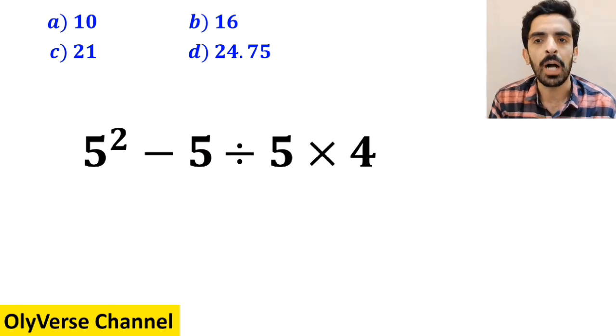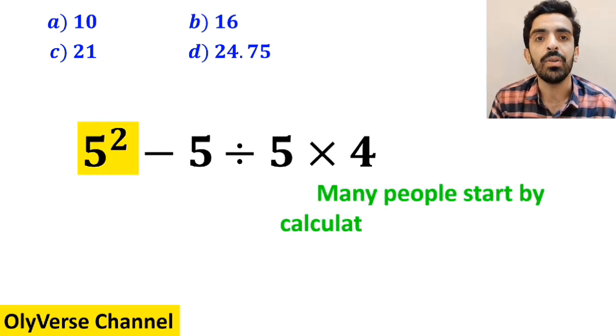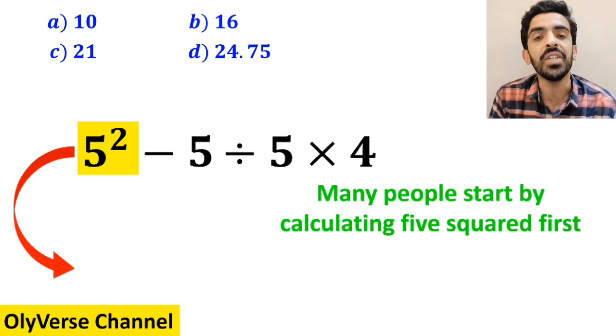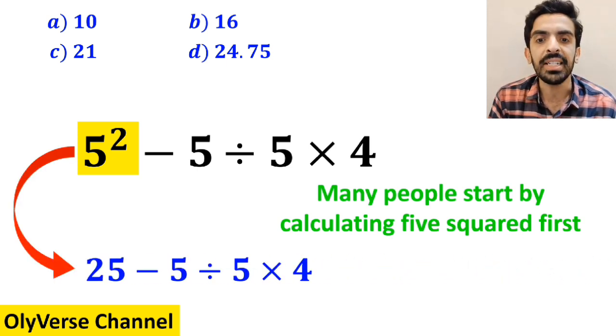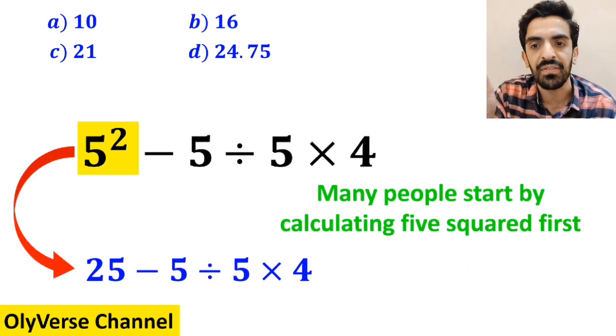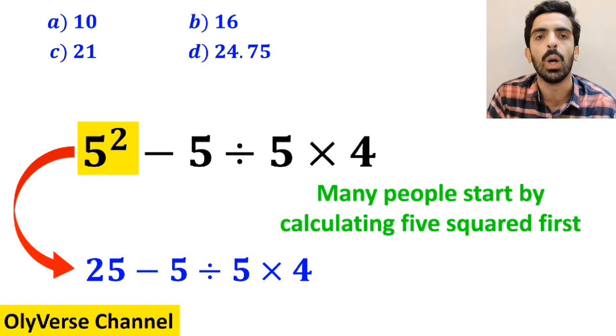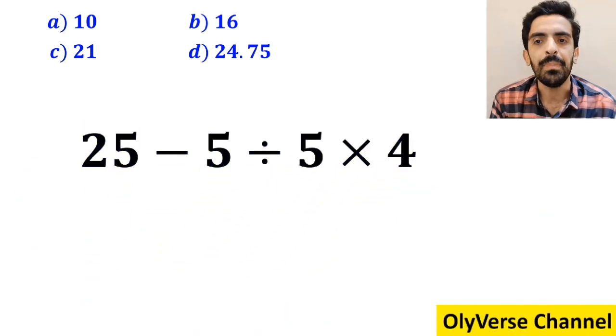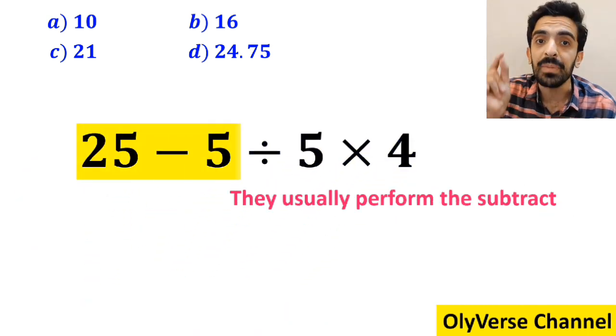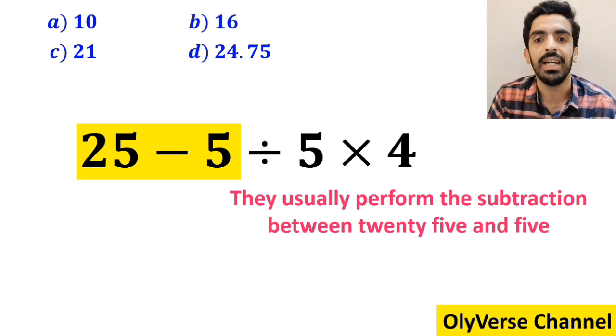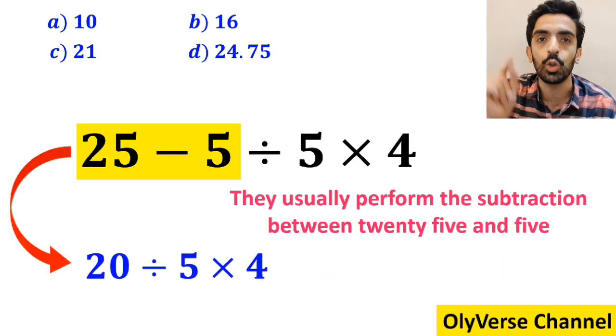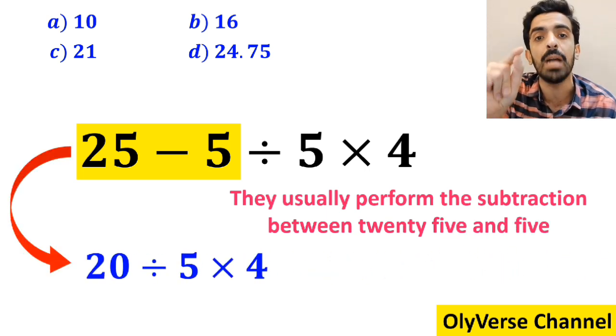To solve this problem many people start by calculating 5 squared first and instead of the original expression they rewrite it as 25 minus 5 divided by 5 then times 4. In the next step they usually perform the subtraction between 25 and 5 and simplify this expression to 20 divided by 5 then times 4.